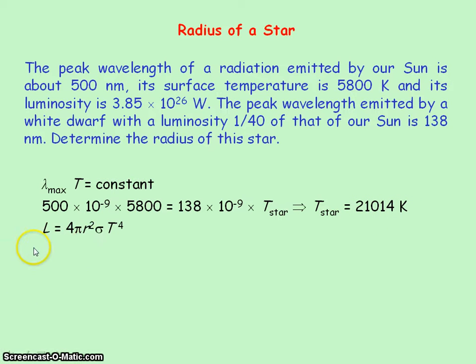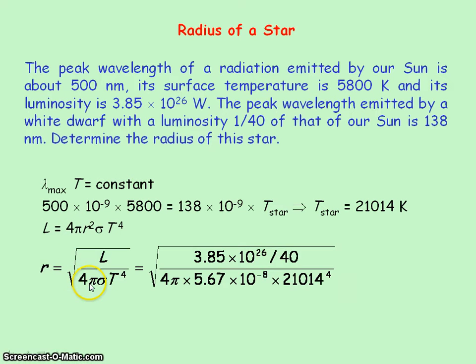And then we use Stefan's law and rearrange it to make the radius the subject. And we substitute in the values, noting that the luminosity of the white dwarf is 1/40th of that of the luminosity of the sun. And this gives the radius of the white dwarf as 8.32 times 10 to the 6 meters.